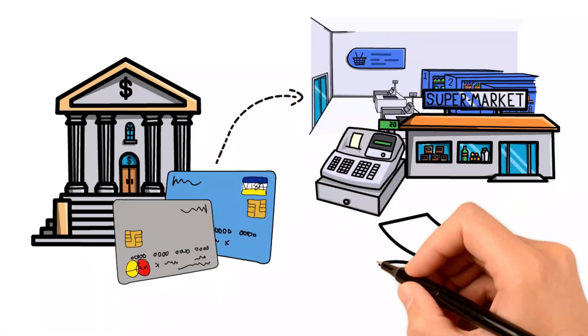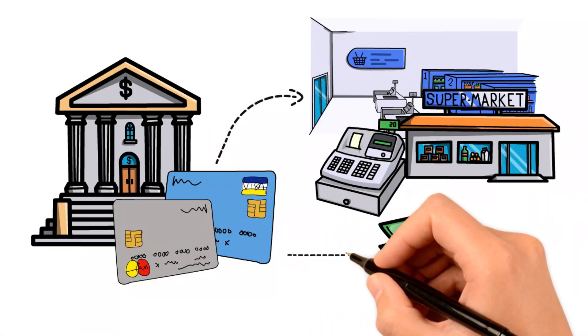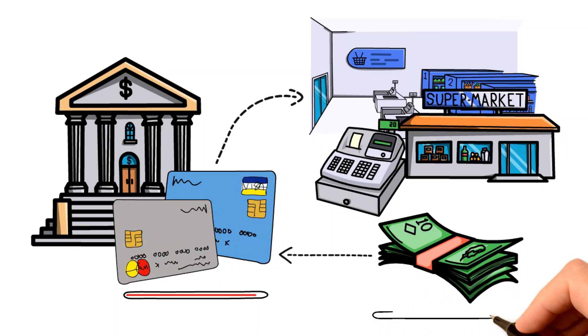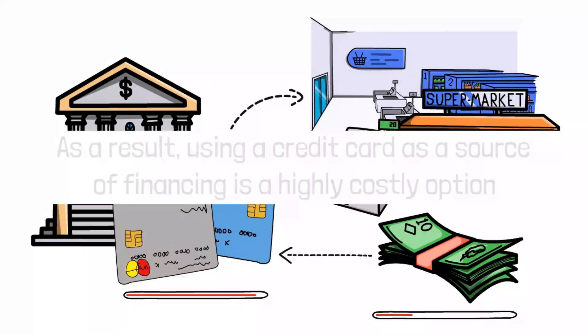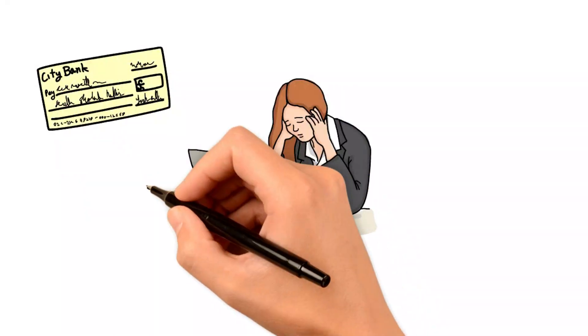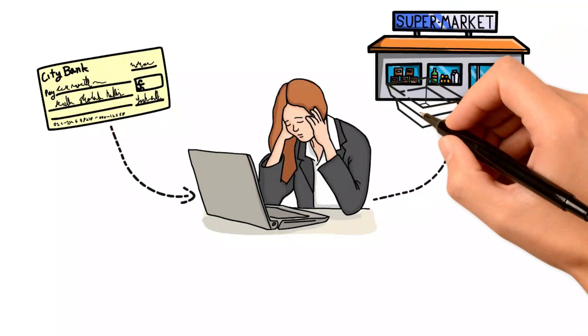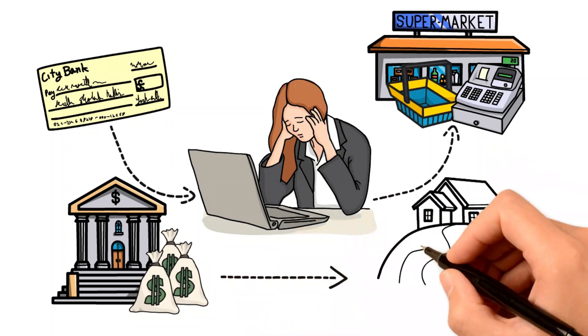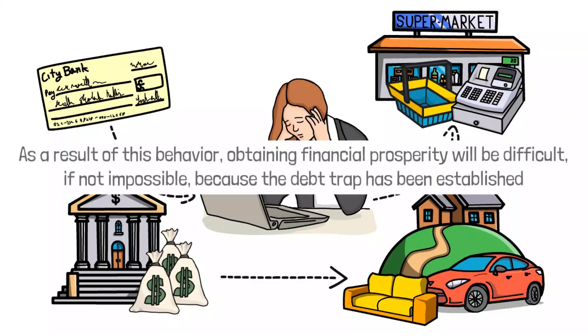Credit card debt is the most popular type of consumer debt, and it also serves as the perfect example of how easy it is to become trapped by it. The most effective way to avoid incurring interest charges is to pay off the amount in full before the introductory period expires. However, most people charge the maximum amount on their credit cards and then pay only the bare minimum each month. Combined with a very high interest rate, this little payment barely covers the monthly interest. As a result, using a credit card as a source of financing is a highly costly option. If a person spends every dollar they receive, it is evident that they are not saving for the future. And this means they will almost certainly need to take out a loan to finance large-ticket things such as furniture or travel. As a result of this behavior, obtaining financial prosperity will be difficult, if not impossible, because the debt trap has been established.